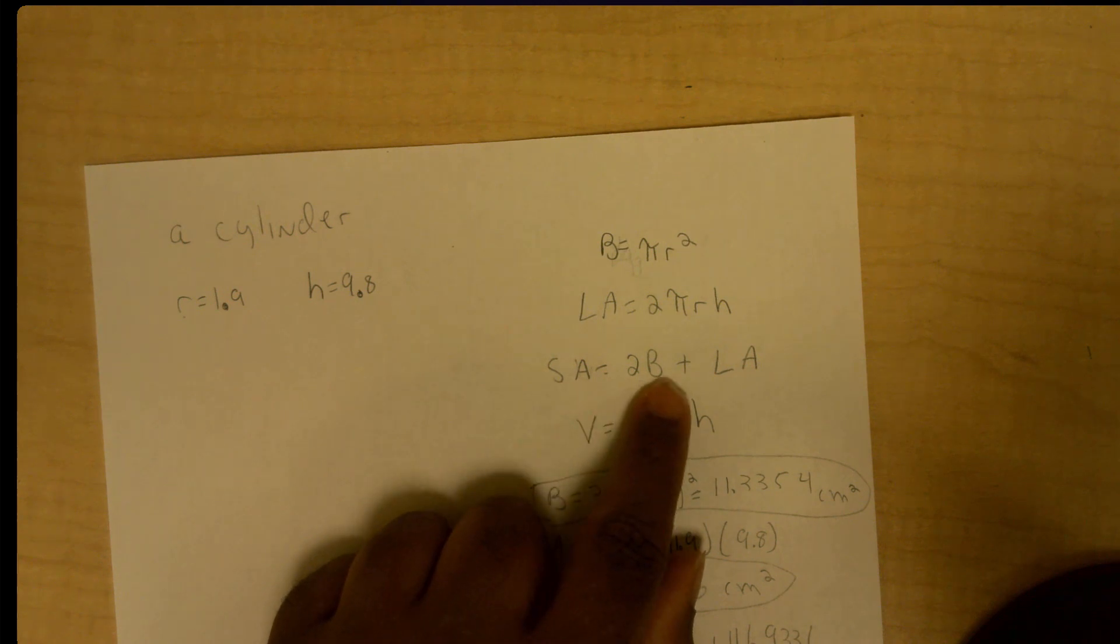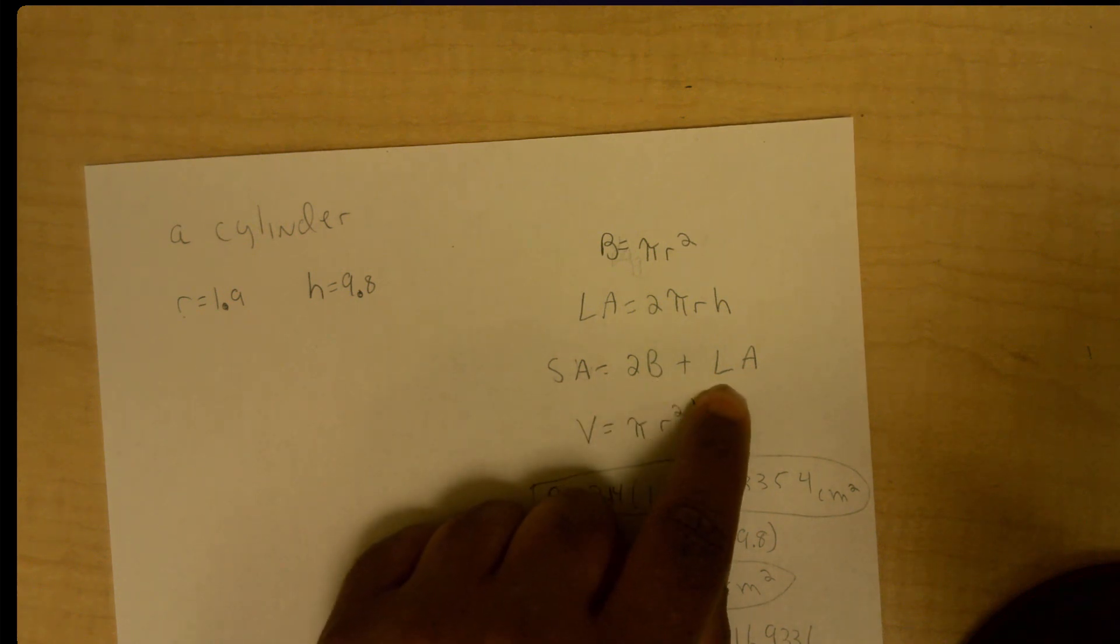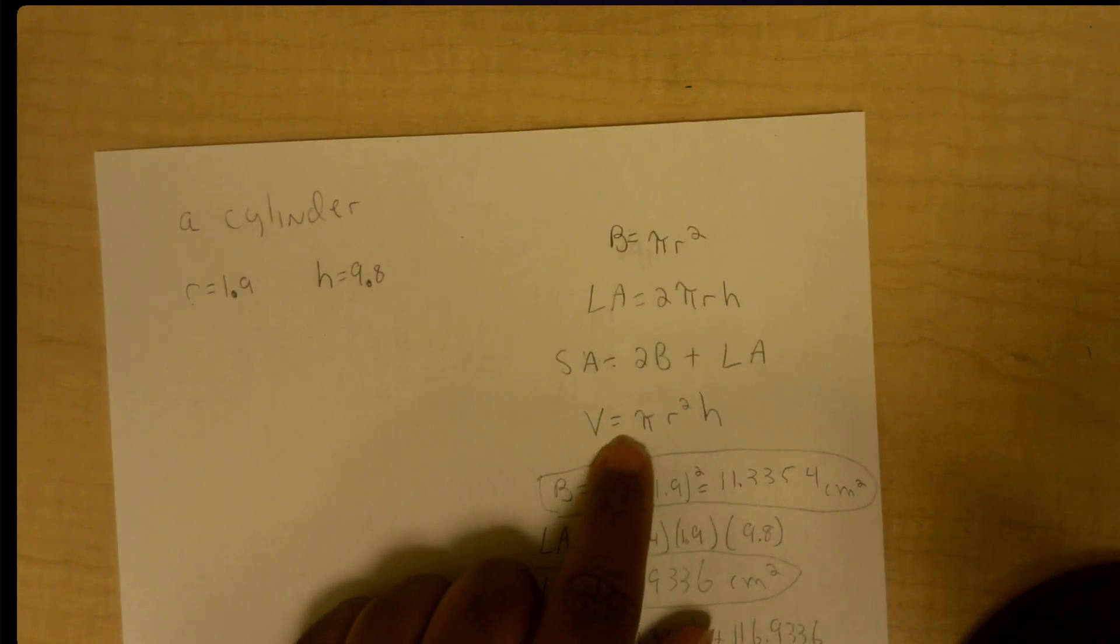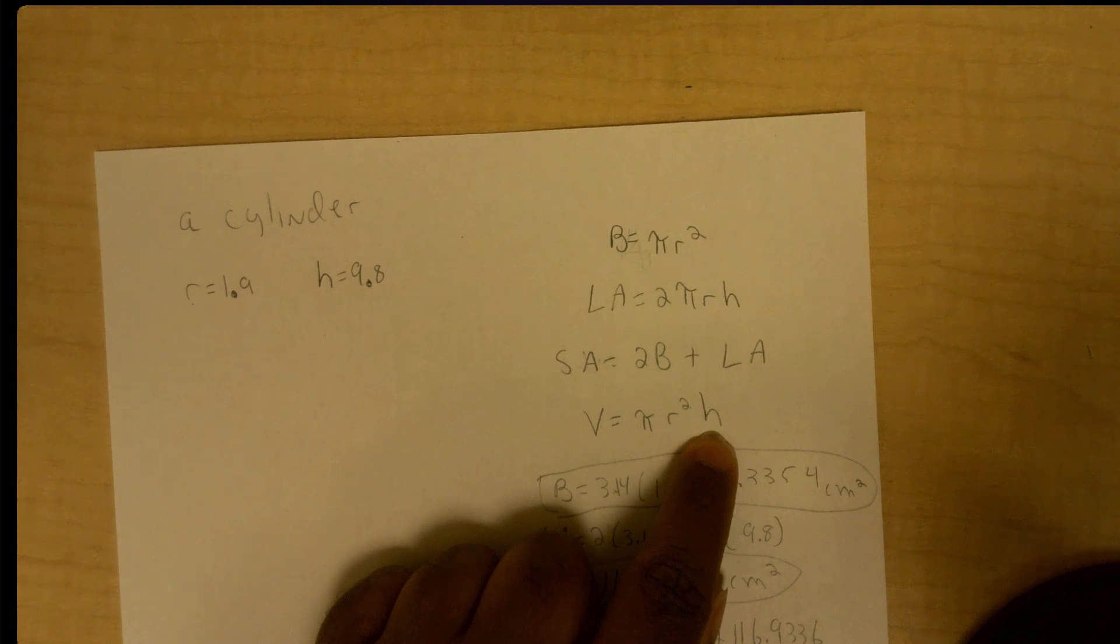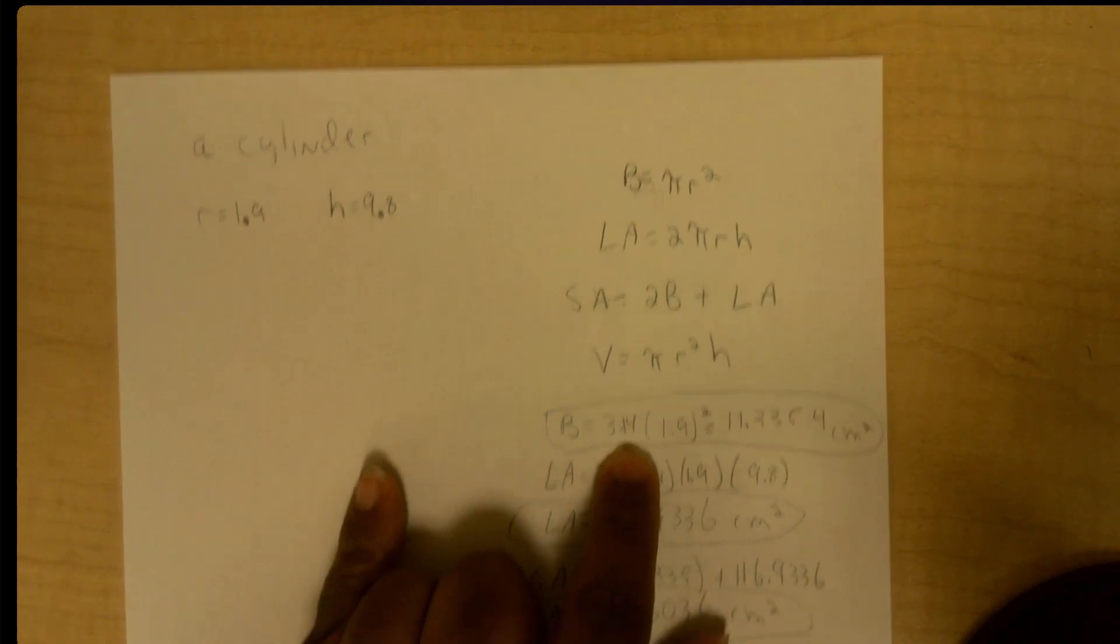The surface area is going to be twice the base plus the lateral area, since we have a top and a bottom here. And that's my formula for the volume, pi r squared h. For pi here, I'm using 3.14.